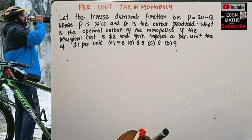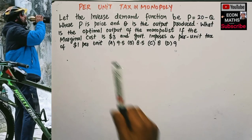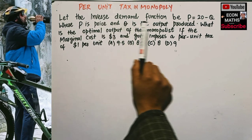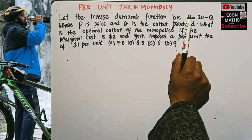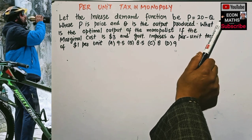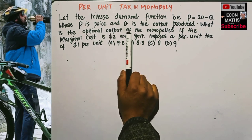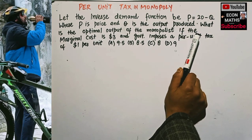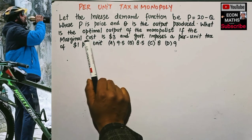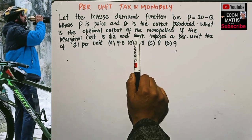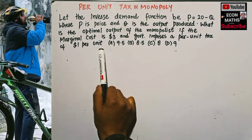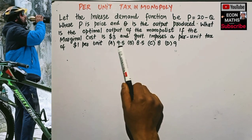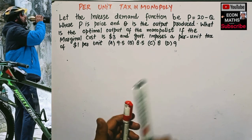In this video we will learn about the imposition of per unit tax in monopoly. The question is: let the inverse demand function be p = 20 minus q, where p is the price and q denotes the output produced. What is the optimal output of the monopolist if the marginal cost is $3 and the government imposes a per unit tax of $1 per unit? The options are 9.5, 8.5, 8, or 9.